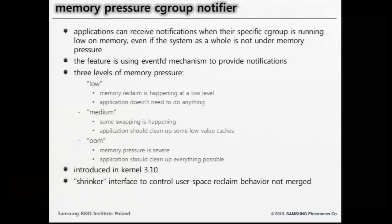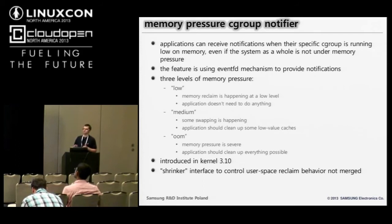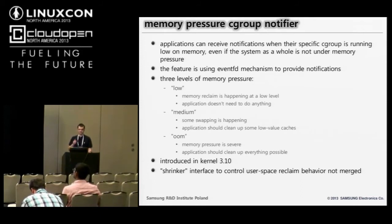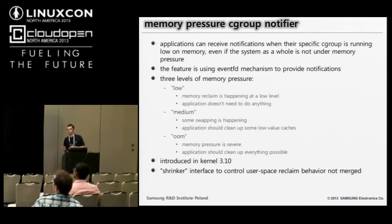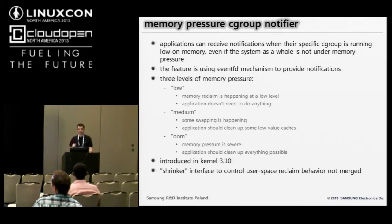We have the memory pressure cgroup notifier feature, introduced in kernel 3.10. It allows applications to receive notifications when a specific cgroup is running low on memory, even if the whole system is not under memory pressure. There are three levels of memory pressure defined: low, medium, and OOM. Low means memory reclaim is happening at a low level and the application practically doesn't need to do anything. Medium means some swapping is happening and the application is recommended to free unimportant data. OOM level means memory pressure is quite high and the application should free whatever is possible.